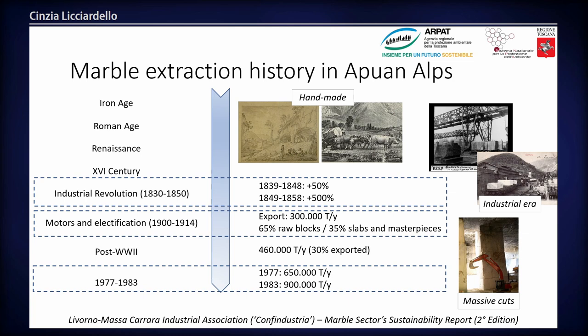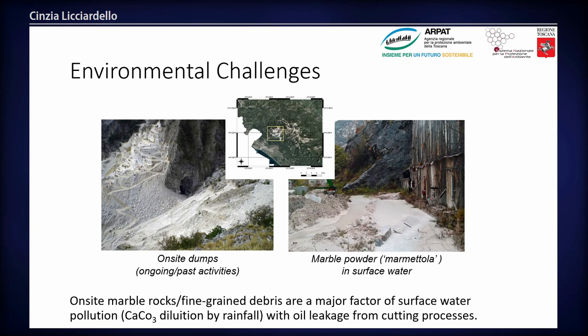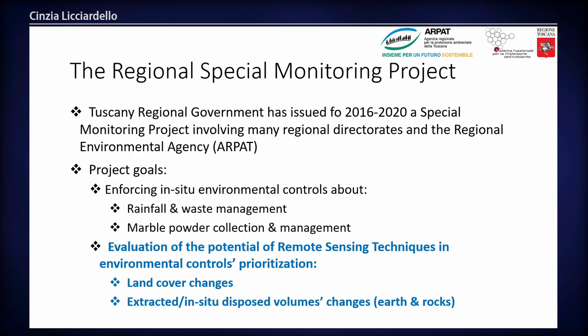This dramatic increase led to many problems. The main factor of environmental pollution is the presence of very big waste dumps coming from past extraction works. With rainfall, these great dumps become marble slurry that flows into the river beds, disrupting every form of life. This is a very important environmental question.